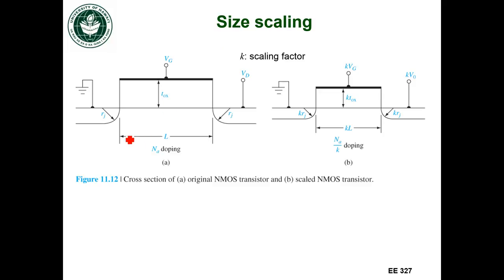So one would be the length of the gate L, the doping concentration, the thickness of the oxide could vary. Something that's not shown but that could also change would be the width of the gate W.